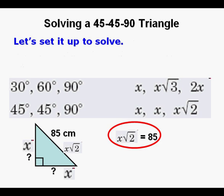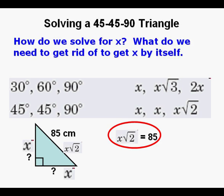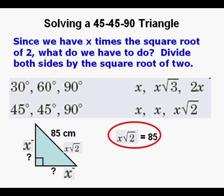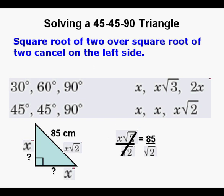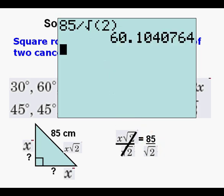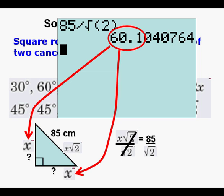How do we get rid of that √2 to get x by itself? We're going to divide both sides by √2. They cancel out on the left side. We go to our calculator: 85 divided by √2 equals 60.1 rounded to the nearest tenth. And so those would be our sides.